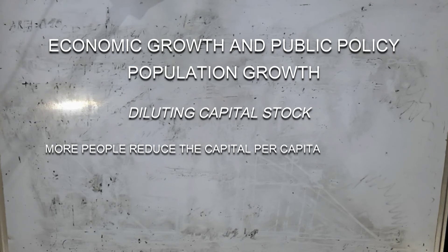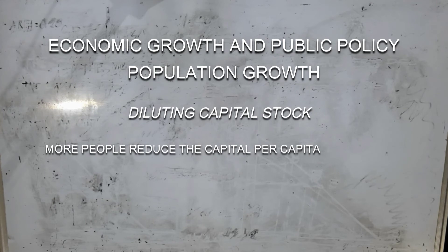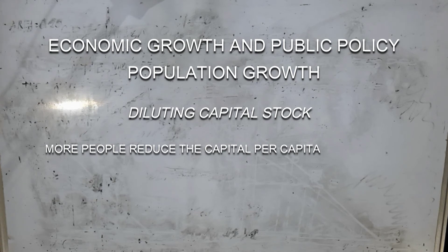In some countries, like China, the government used to allow only one child per family, and any couple who violated this rule was subject to substantial fines. In countries with greater freedom, the goal of reduced population growth is accomplished less directly by increasing awareness of birth control techniques. But people respond to incentives — having a child, like any decision, has an opportunity cost. When that opportunity cost rises, people will choose to have smaller families.